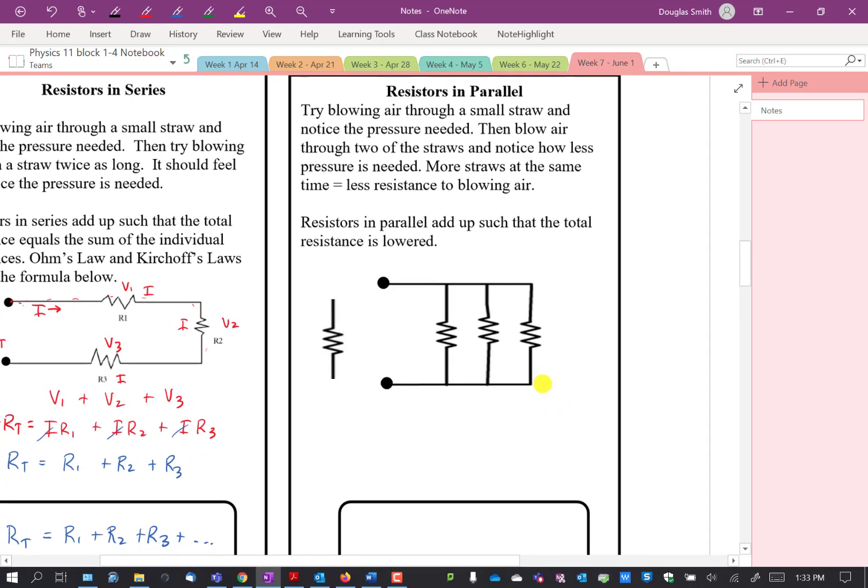In parallel, it's different. I'll use a straw analogy again. If you blew through one small straw, it'd be pretty hard. But if you put two straws in your mouth at the same time, not end on end but separately, or three or four, it'll become easier and easier. As you add more straws at the same time, it gets easier. That's what we say with resistors - resistors in parallel add up such that the total resistance is lowered. Let's think of this circuit where all these resistors have the same voltage V. This is I1, I2, I3, and this is resistor 1, resistor 2, resistor 3. We can think of this as an equivalent circuit.